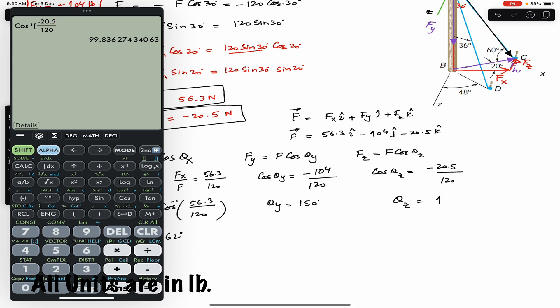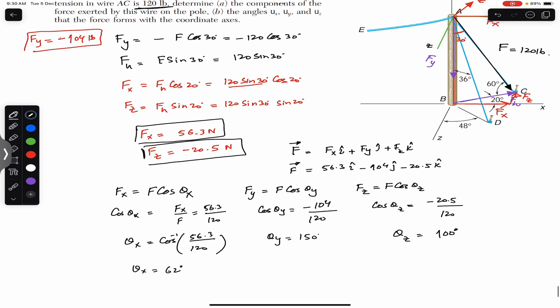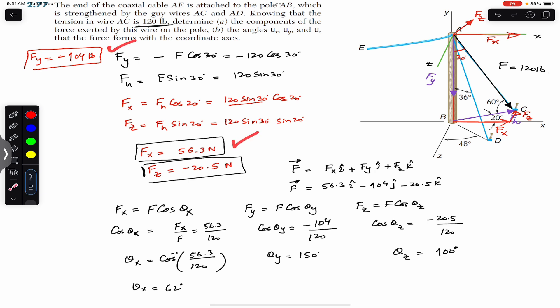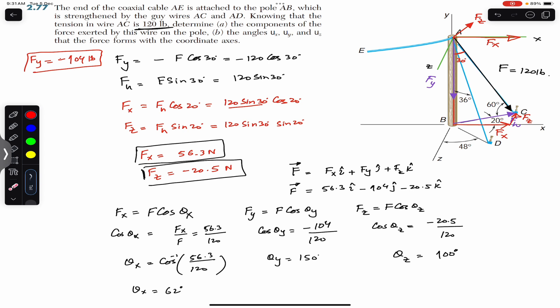So force F makes 62 degrees with the positive x-axis, 150 degrees with the positive y-axis, and 100 degrees with the positive z-axis. These are the components Fx, Fy, and Fz, and these are the angles θx, θy, and θz that force F makes with the positive x, y, and z axes. This is the solution to this problem — I hope this helps. Do subscribe to Engineers Academy for solutions to more problems from Vector Mechanics for Engineers by Beer and Johnston.